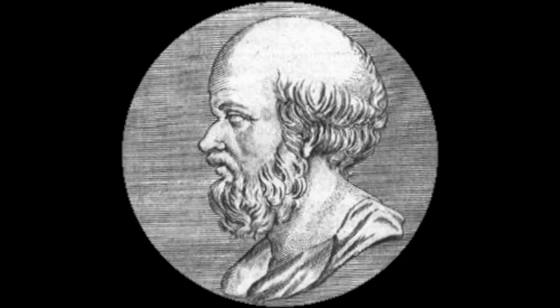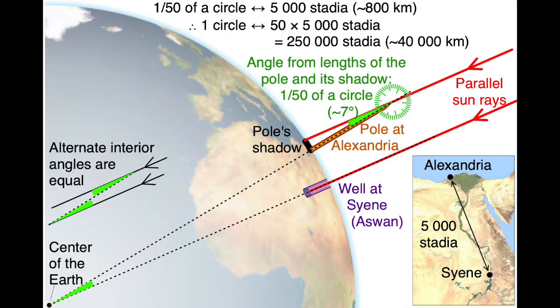Eratosthenes is a famous mathematician who was able to measure the circumference of the Earth, distance of the Earth from the Sun, and the distance of the Moon from the Earth without using any telescope or other equipment.